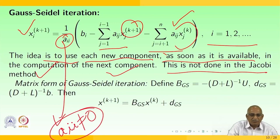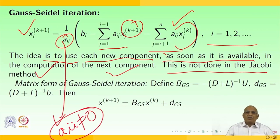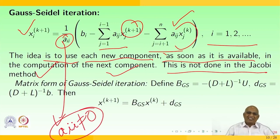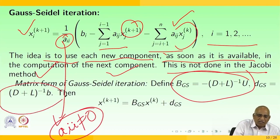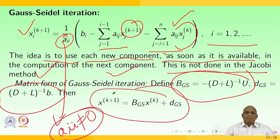The main difference is the idea of using each new component as soon as it is available — whatever value is available, you update it each time without waiting for the next variable. For instance, if x1 is known, just use it while computing x2; similarly use x2 while computing x3. The matrix form of the Gauss-Seidel iteration is: B_{GS} = -(D + L)^{-1} U and d_{GS} = (D + L)^{-1} b. Then x^(k+1) = B_{GS} x^(k) + d_{GS}.